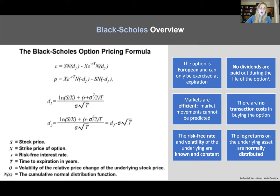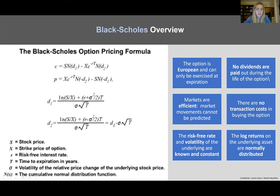We can go through the math and there's a proof in the appendix, but just know these are the formulas. N is going to be the normal cumulative density function, often denoted by phi as well. You use d1 and d2, and you're taking the log, which is in reference to the log returns on the asset being normally distributed.